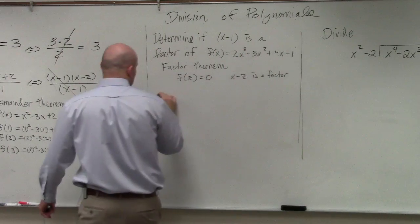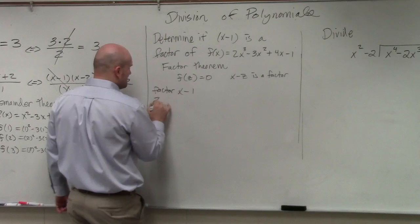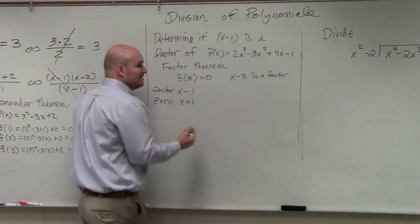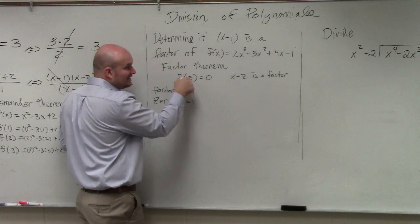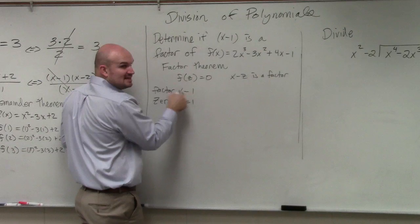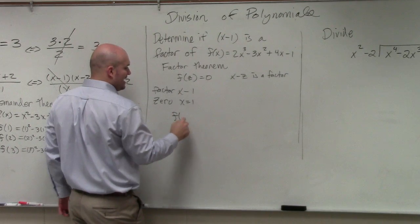So if we're asking, if I'm saying my factor is x minus 1, then my 0 is x equals 1. So what this is saying is, if I plug in 1 into my function and I get 0, then this is a factor. So all we need to do for this is plug in f of 1.